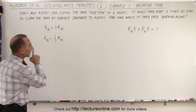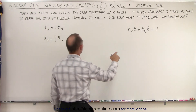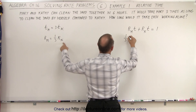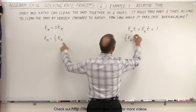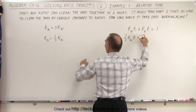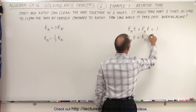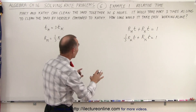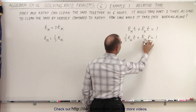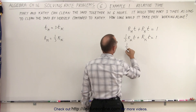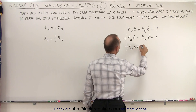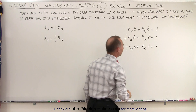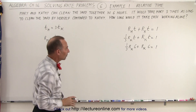That being true, we can then plug that into the equation. So we can say the rate of Mary, which is one-third the rate of Kathy, times the time spent, plus the rate of Kathy times the time spent, is equal to one. We realize that both of them can do the job in six hours, so we plug in six for t: one-third the rate of Kathy times six, plus the rate of Kathy times six, equals the whole job done.